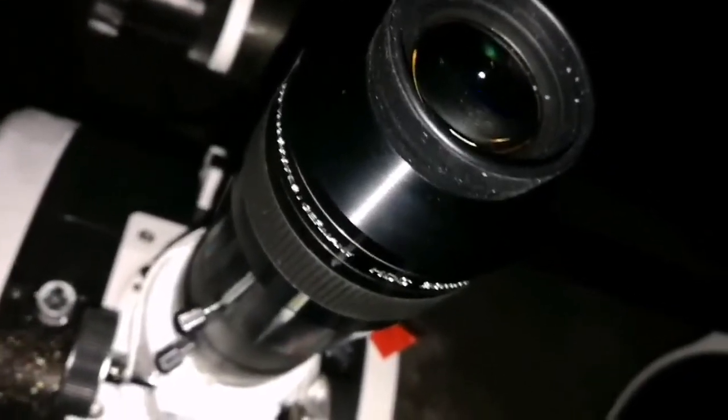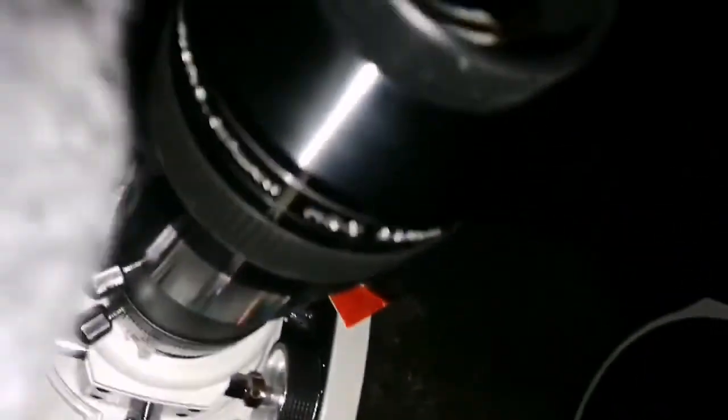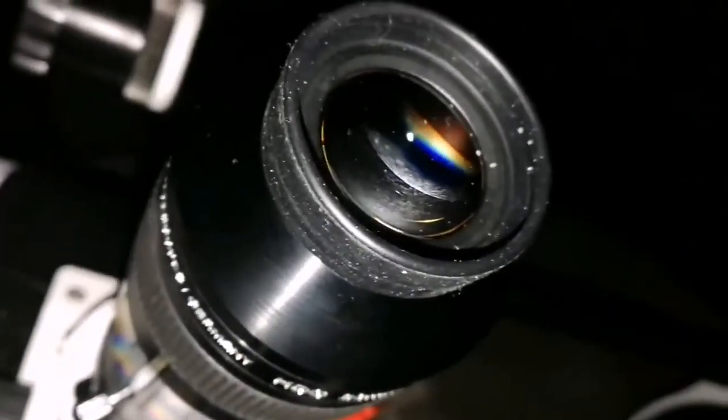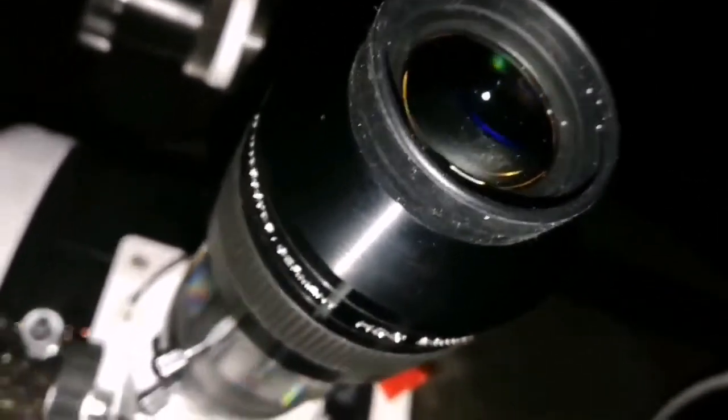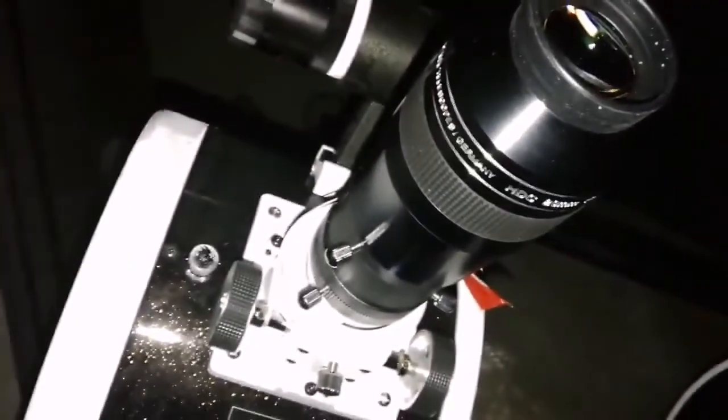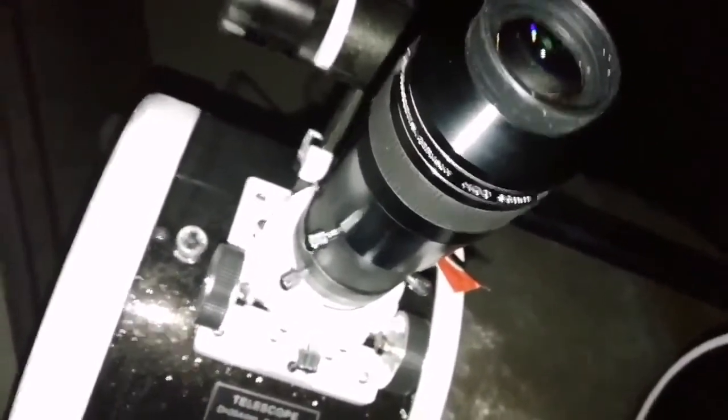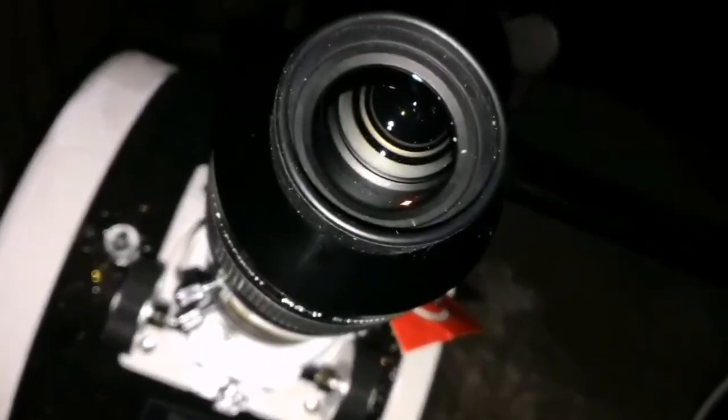I've not collimated this telescope, this mirror of this telescope, so practically it's not collimated. But I can split all the components of the Sigma Orionis with this eyepiece with this telescope. That's really good, that's really amazing. The level of details I can see in the Orion Nebula M42.